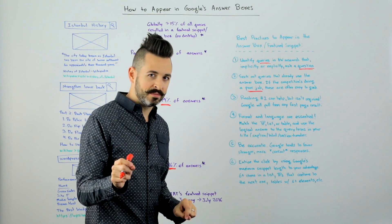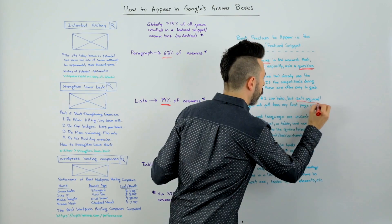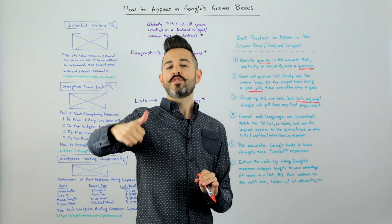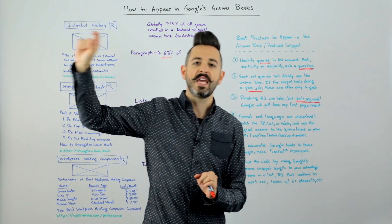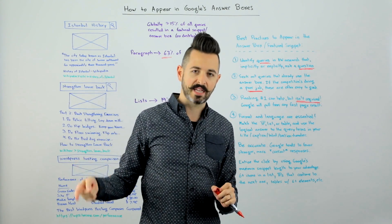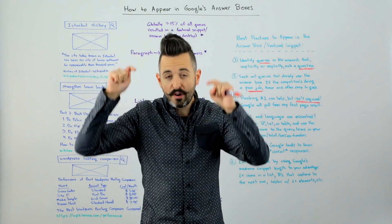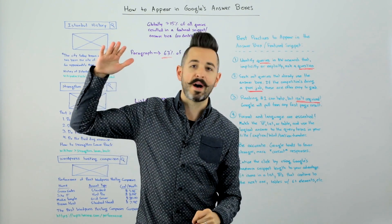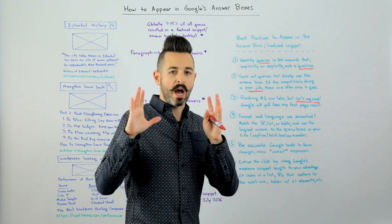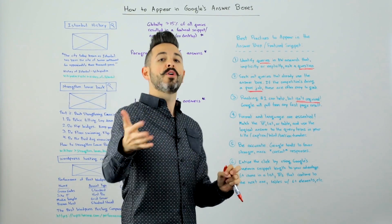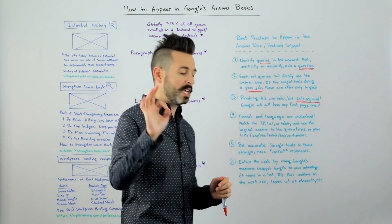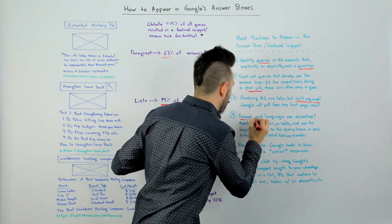Ranking number one is helpful, but it is not required. Google will pull from any first-page result. You can test this yourself — if you do a query that pulls up an answer box and then add '&num=100' to the query string or change your settings to show 50 or 100 results, they are often pulling from a lower-down result, sometimes in the bottom 30 or 40 results rather than the top 10. Google is essentially triggering the answer result from anything that appears on page one, which means you could be ranking number six, seven, eight, nine, or ten and still get the answer box.